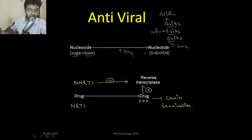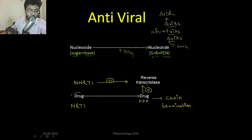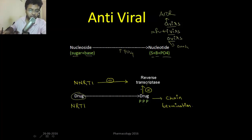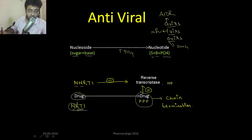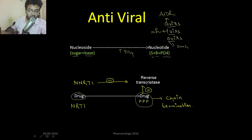Nucleosides are sugar plus base, and nucleotides are sugar, base, and phosphate. In order to convert nucleoside into nucleotide, you have to add phosphate. So a drug which enters the cell needs to be phosphorylated to convert into nucleotide. This phosphorylated drug, which is a nucleotide, will inhibit reverse transcriptase in the case of HIV, and also leads to chain termination — because that nucleotide will be incorporated into the genome and will lead to chain termination.